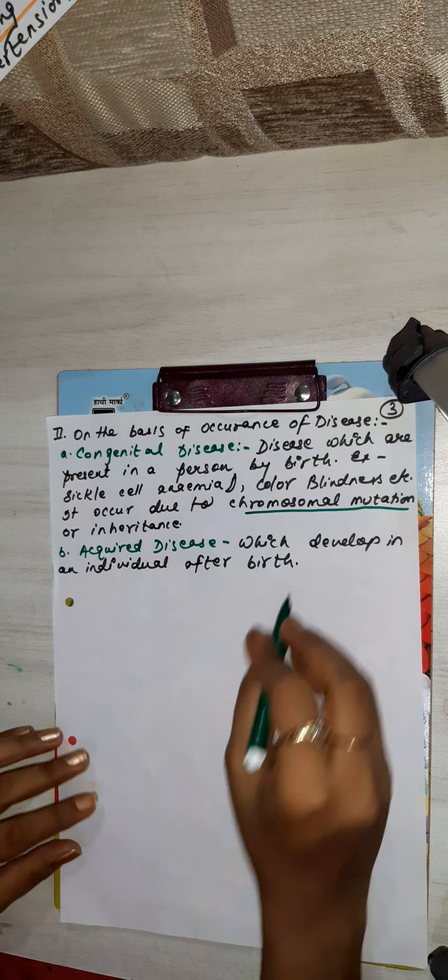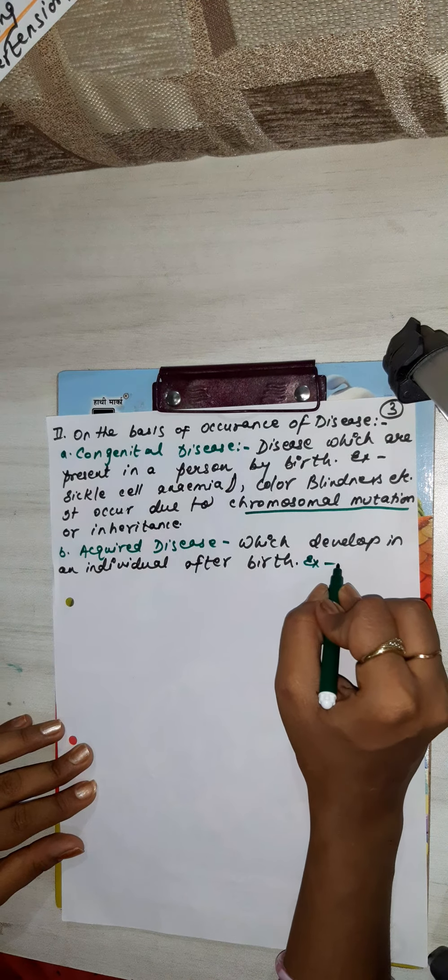Diabetes is an acquired disease. Cholesterol problem, TB, coronavirus, ringworm — they are all called acquired diseases. Typhoid, common cold, diarrhea, hypertension — these all occur after birth. There are lots of examples you can write on your own.